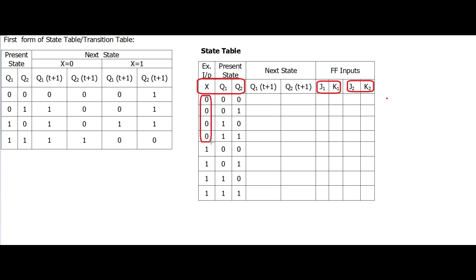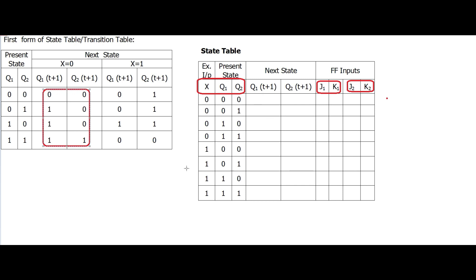When x equals 0, this is the first half; when x equals 1, this is the second half. Including the external input in the MSB part, we get combinations: Q1 Q2 — 00, 01, 10, 11 for x equals 0, and 00, 01, 10, 11 for x equals 1. For x equals 0, I copy the corresponding next states from the transition table to fill the first four rows.